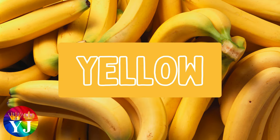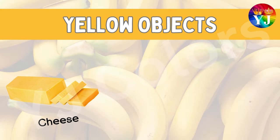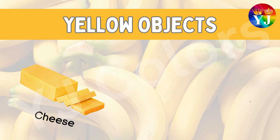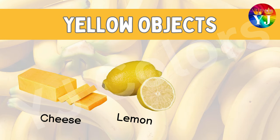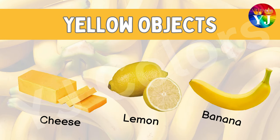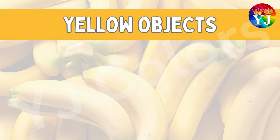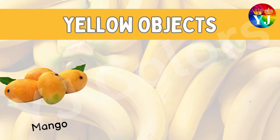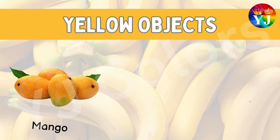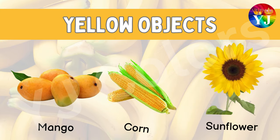Yellow. Examples of yellow: Cheese, Lemon, Banana, Mango, Corn, Sunflower.